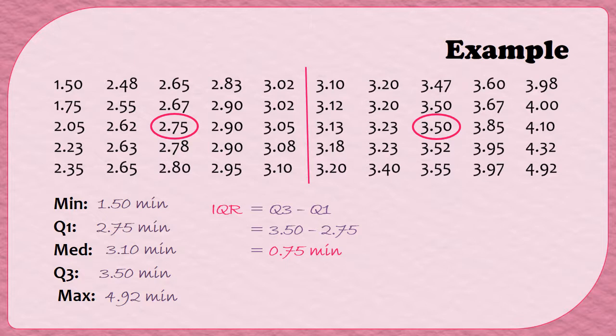Next, we're going to use the IQR to determine the lower and upper boundaries for outliers. To find the lower boundary, we have to subtract 1.5 times the IQR from the first quartile. So Q1 minus 1.5 times the IQR is going to be 2.75 minutes minus 1.5 times 0.75 minutes, and that's going to give us 1.625 minutes. This means that any value in our data set that is smaller than 1.625 minutes is going to be an outlier. In this case, that means our minimum, our 1.5 minutes, is in fact an outlier in our data set.